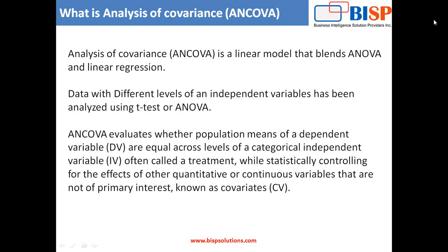ANCOVA is a general linear model that blends ANOVA and regression together. It evaluates whether population means of dependent variables (DV) are equal across levels of a categorical independent variable (IV), often called treatments, while statistically controlling for the effects of other continuous variables not of primary interest, known as covariates or nuisance variables.